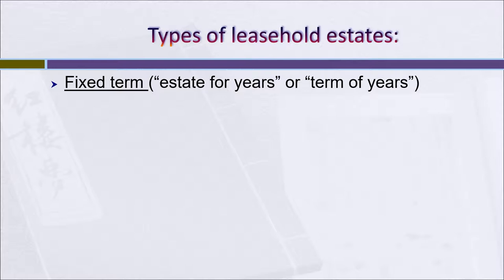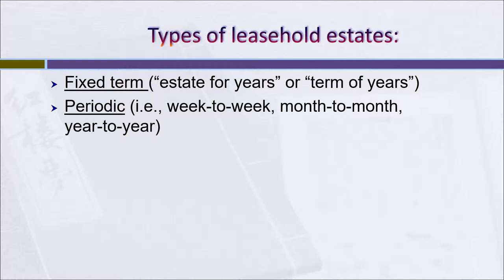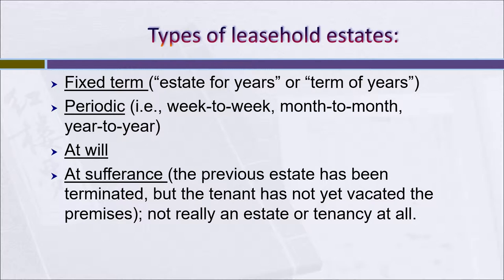There are four kinds of leasehold estates that tenants can hold. The first one is the fixed term, sometimes called an estate for years or a term of years. The second is the periodic estate, which has a definite period of time, such as a week or a month — week-to-week, month-to-month, or even year-to-year. The third is an estate at will, which doesn't have any definite period. The fourth is an estate at sufferance — not really a true estate, but a condition where the previous estate has been terminated, the tenant hasn't vacated, and the landlord hasn't yet decided whether to evict the tenant or allow them to stay and charge additional rent. While in that twilight zone, we call them a tenant at sufferance.